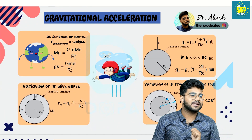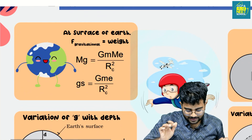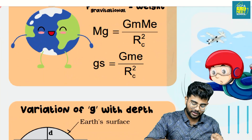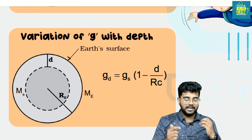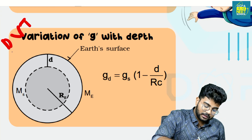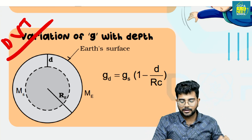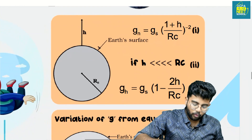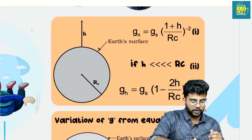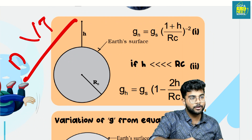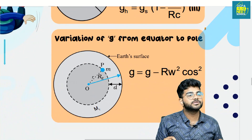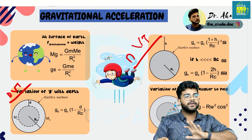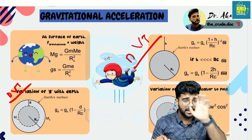The gravitational acceleration g is derived from Gm1m2 divided by r squared. The variation of g is a key derivation — this is really important. What is the variation with height? That derivation is important. Also important is the variation of g from equator to poles. This covers everything about gravitational acceleration.